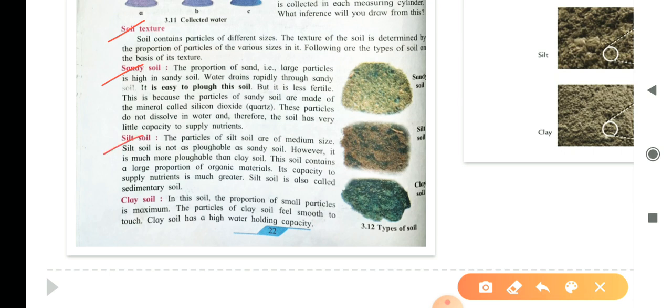Second, silt, silt soil. The particles of the silt soil are medium size. Silt soil is not ploughable as sandy soil. However, it is much more ploughable than clay soil. This soil contains a large proportion of organic materials. Its capacity to hold to supply nutrients is much greater. Silt soil is also called sedimentary soil.